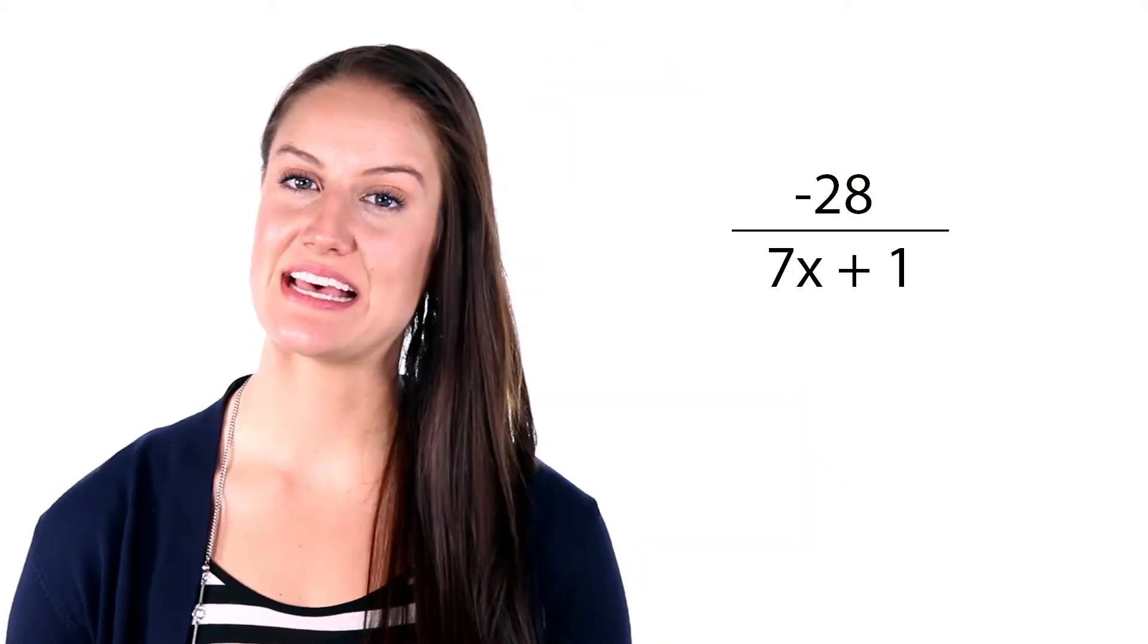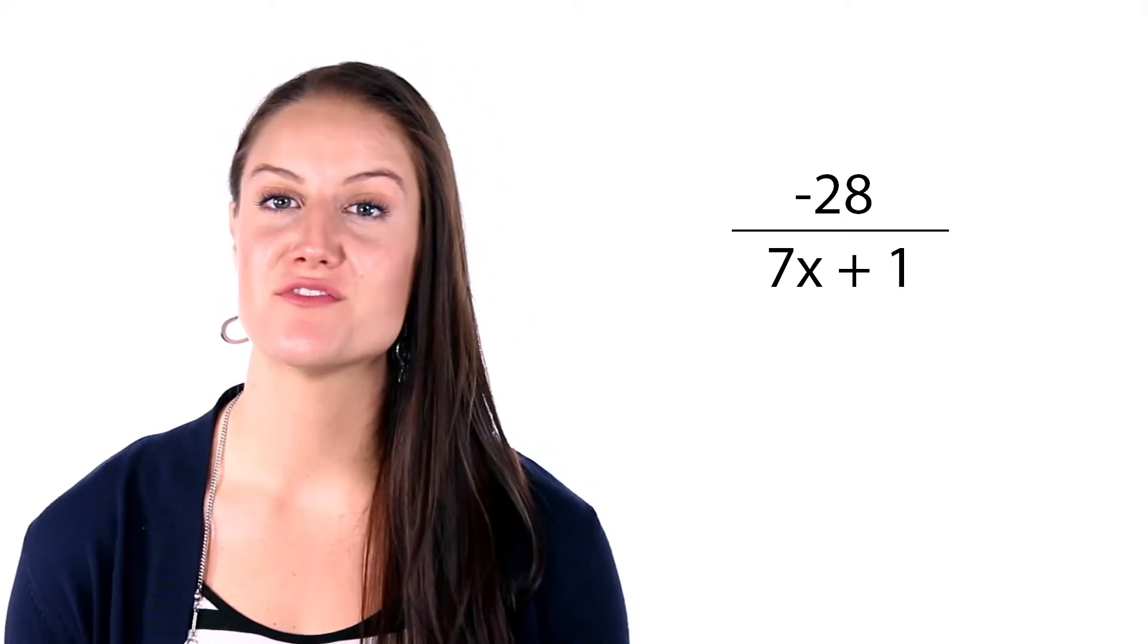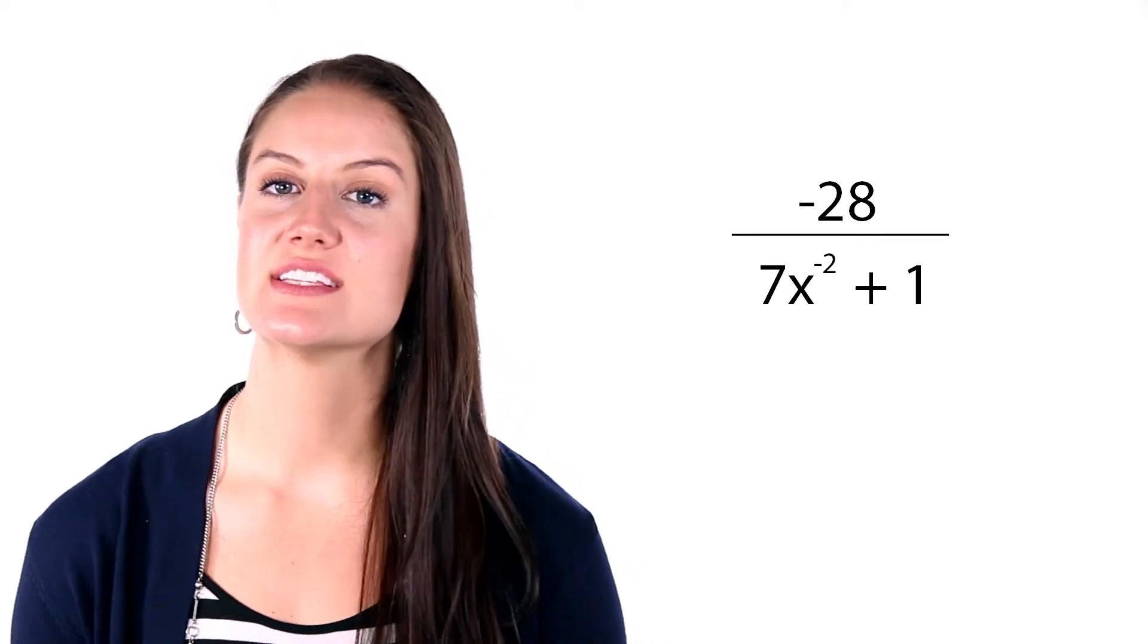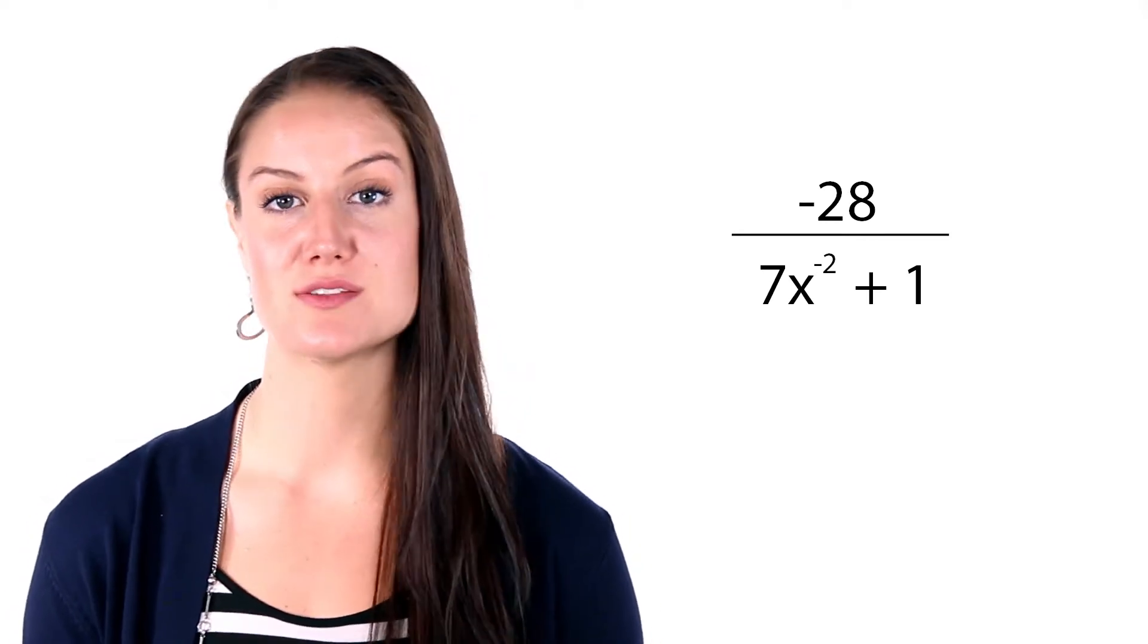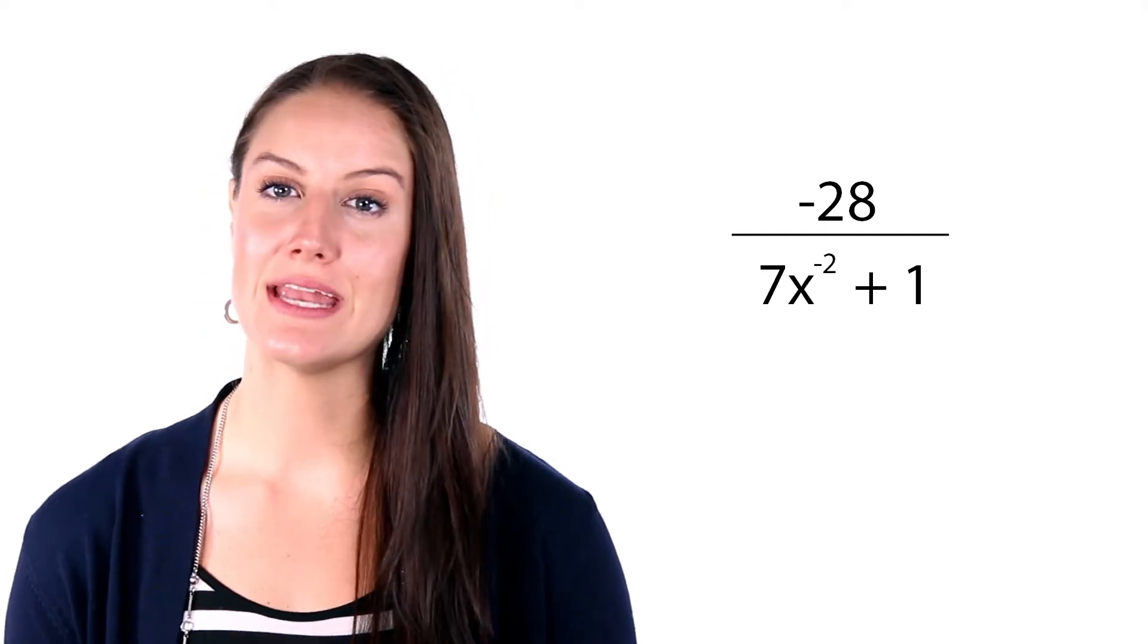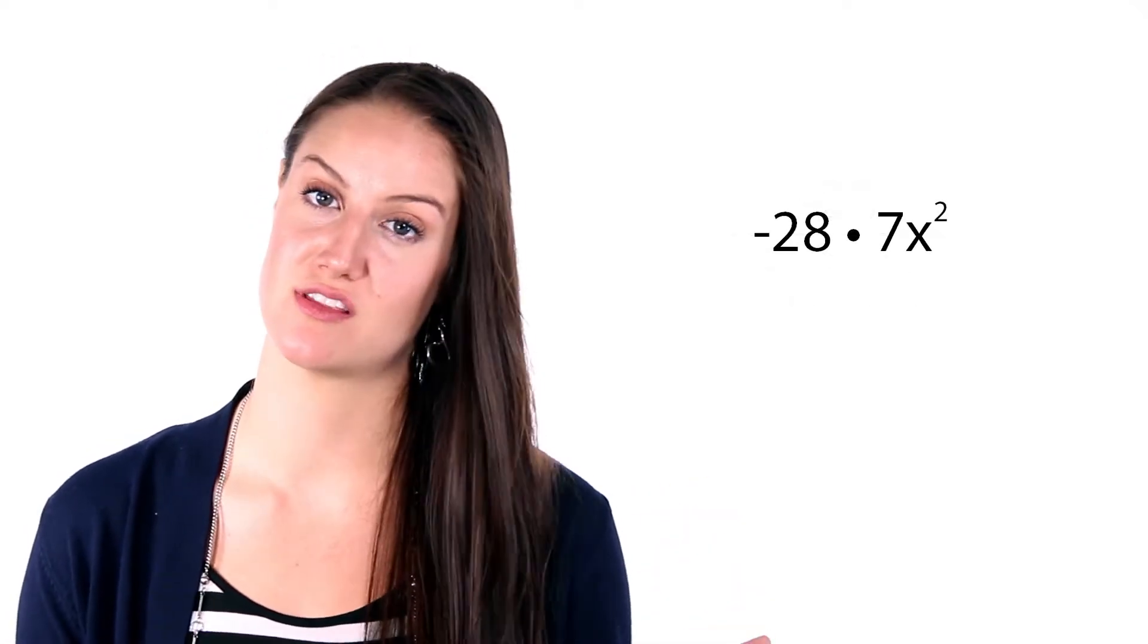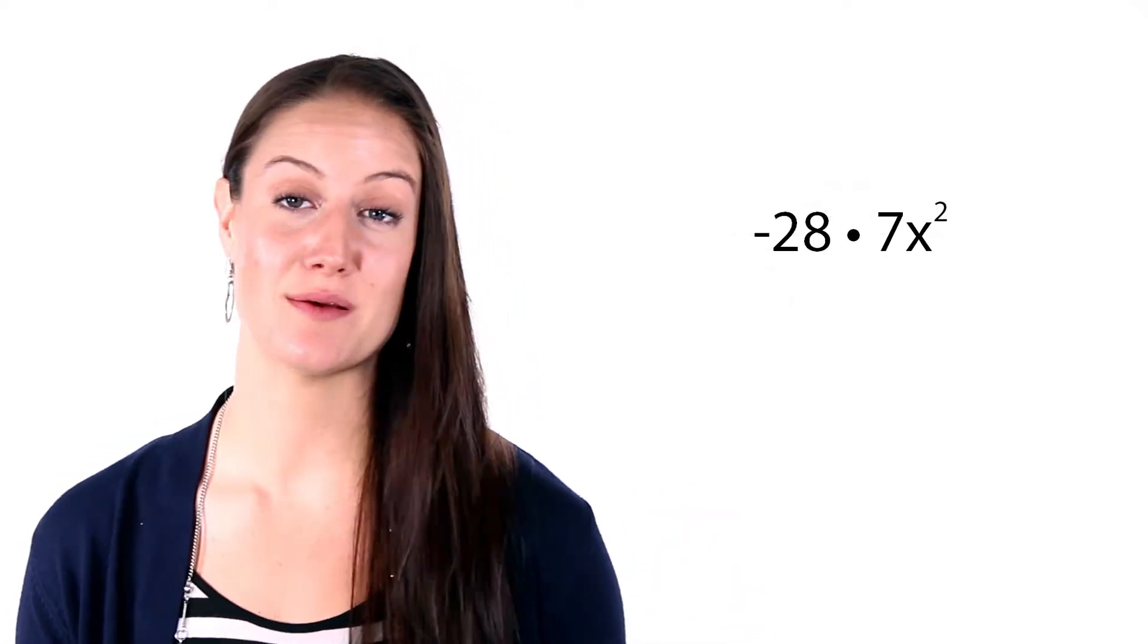Negative 28 divided by 7x plus 1 is not a polynomial, because there is a variable in the denominator. Now, we have to be careful and remember all of our algebra tricks. Take a look at this. Negative 28 divided by 7x to the negative 2nd plus 1. Because the exponent in the bottom has a negative exponent, we know that when simplified, the exponent is actually moved to the top, which means that this is a polynomial.